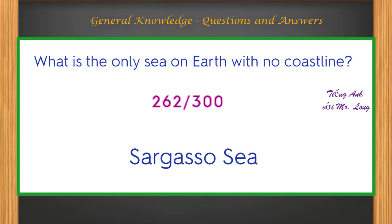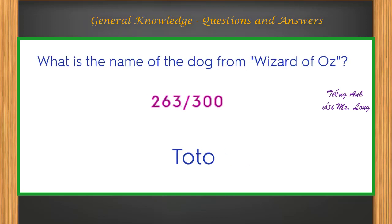What is the only sea on Earth with no coastline? Sargasso Sea. What is the name of the dog from Wizard of Oz? Toto.